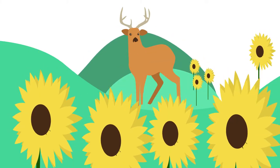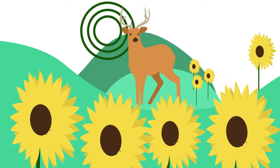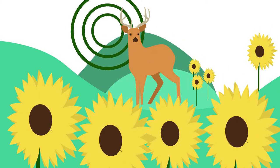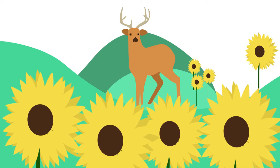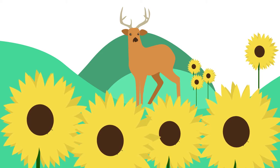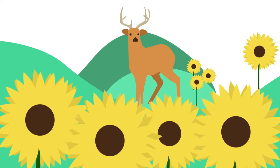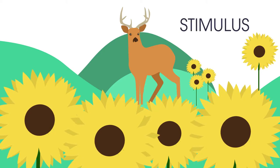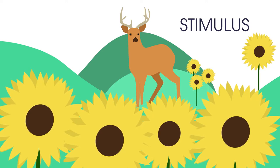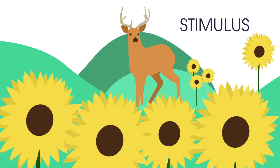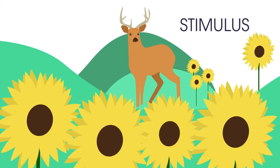All animals and plants are sensitive. They detect changes in their environment. This is one of the seven life processes. Any change that is detected is called a stimulus. If necessary, they then respond to stimuli in various ways.